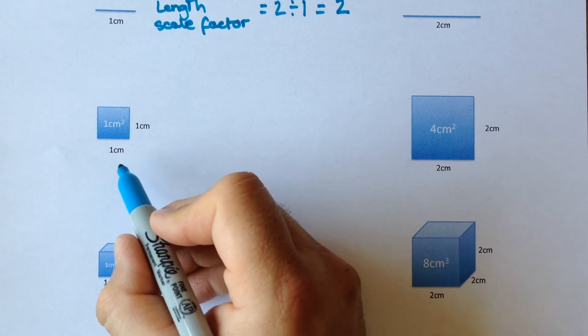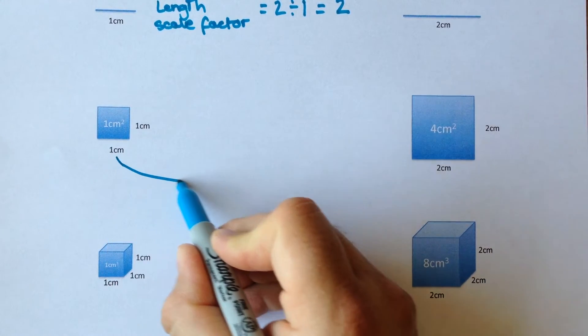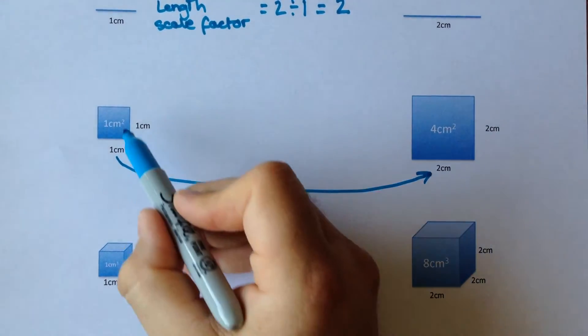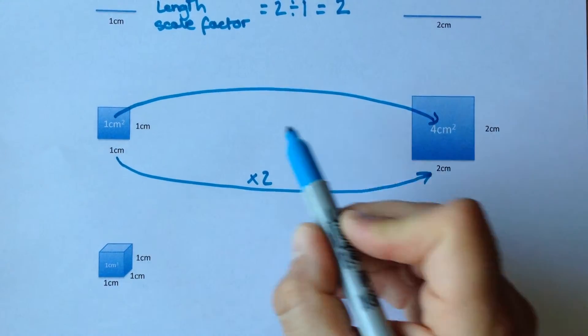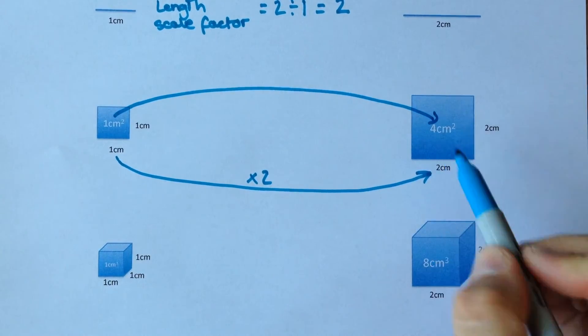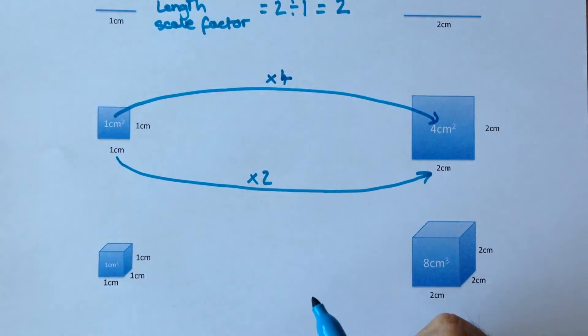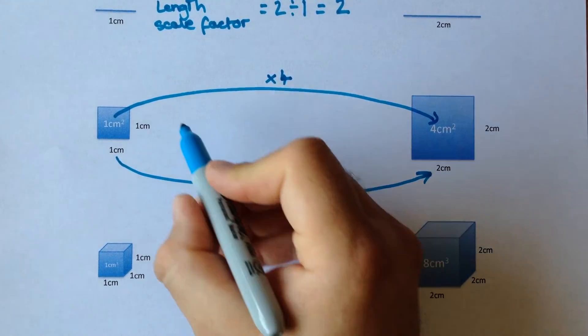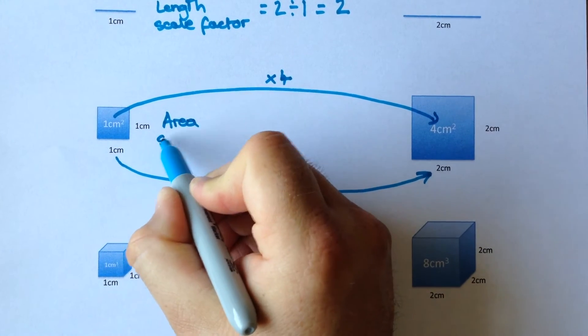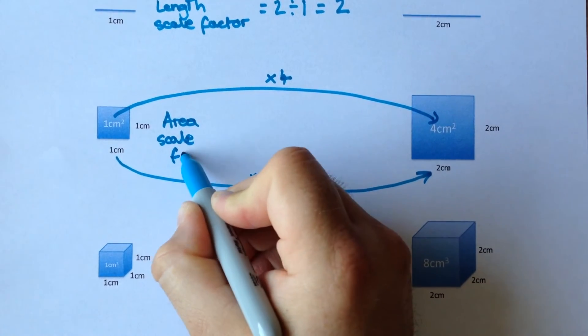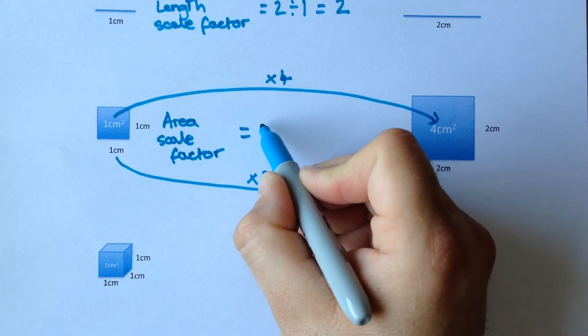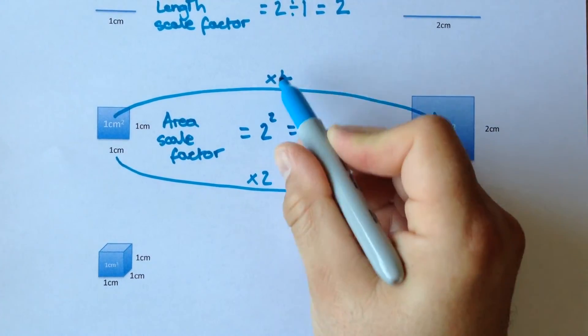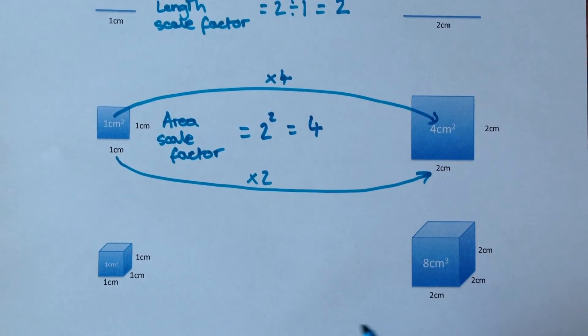Now, with area, in this example, the length scale factor to get from 1 to 2 is still 2, but you'll notice that area has gone from 1cm squared to 4cm squared, so that would be a scale factor of 4. Now, if you know the length scale factor, it's easy to work out the area scale factor. All you have to do is square the length scale factor, so in this case 2, 2 squared gives us a 4.